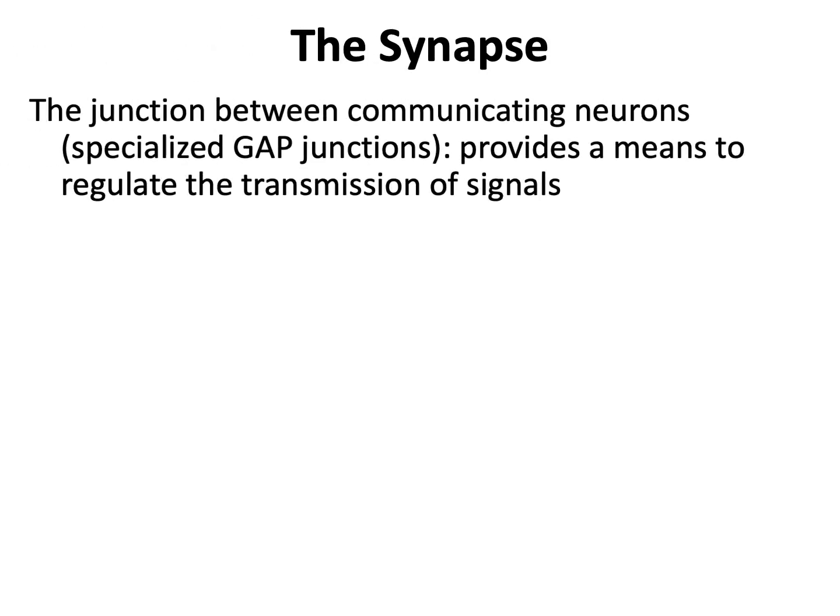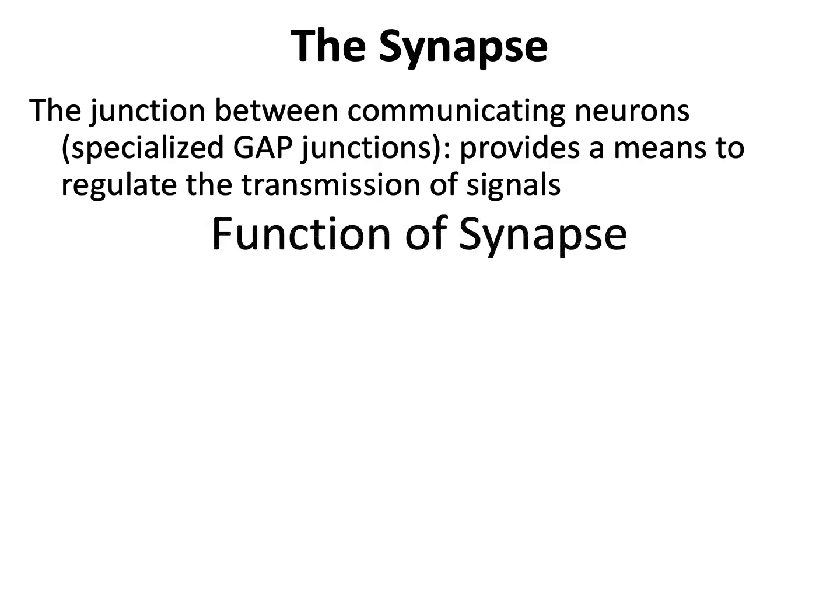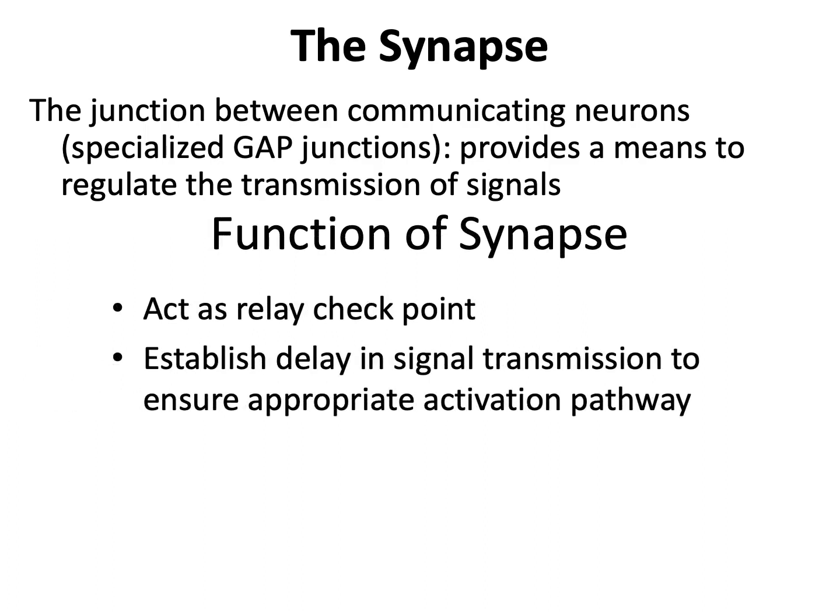The synapse is the junction point between neurons and whatever tissue it's interacting with. It's the communication point — a specialized gap junction. The function of the synapse is to act as a relay checkpoint. It establishes a delay in the transmission of the signal so that we ensure the appropriate pathway is being activated.